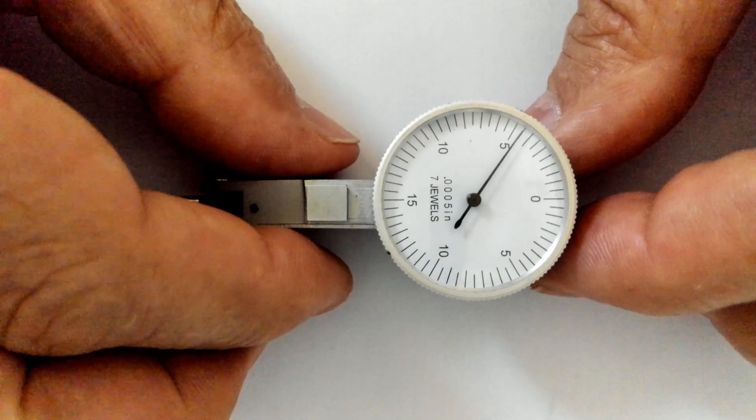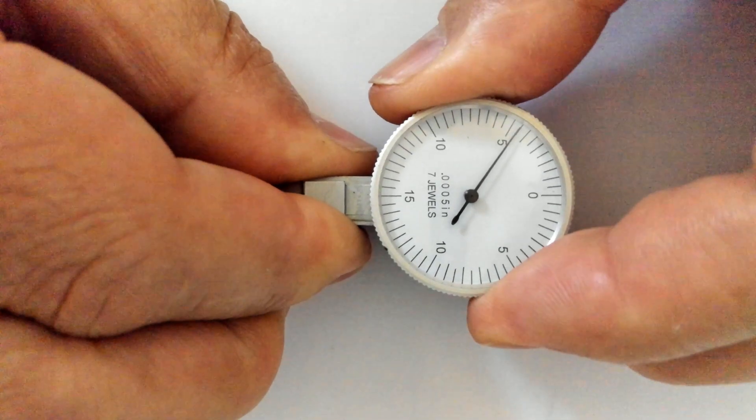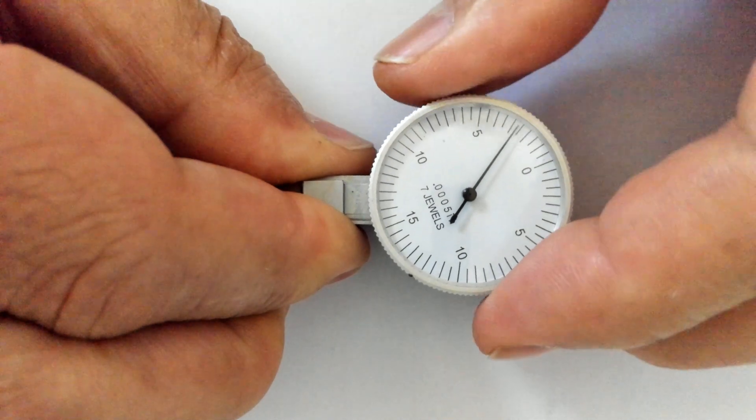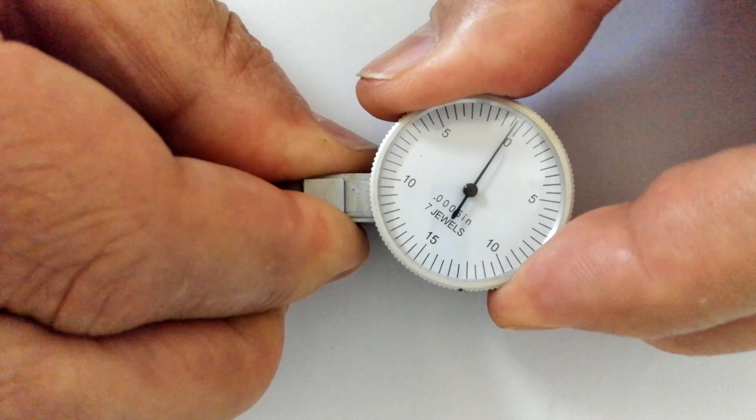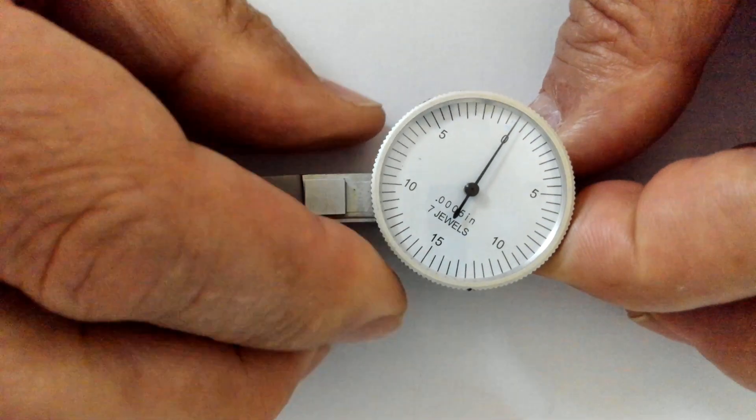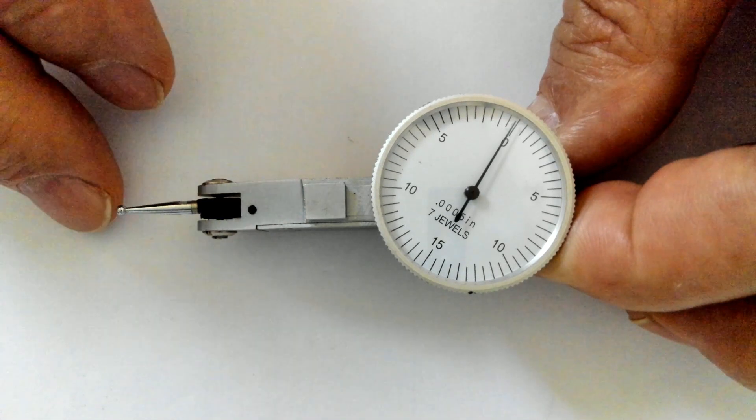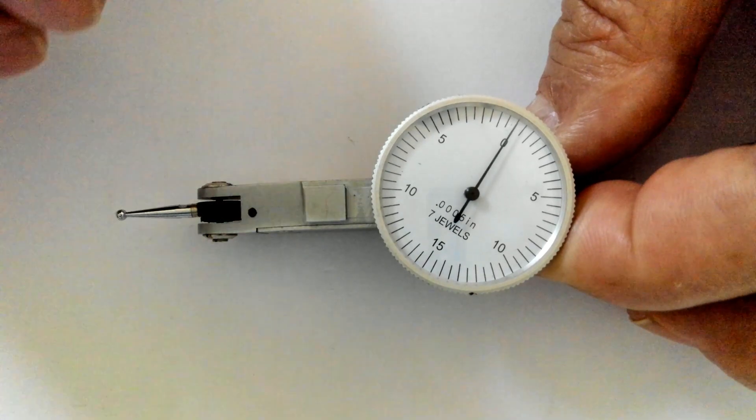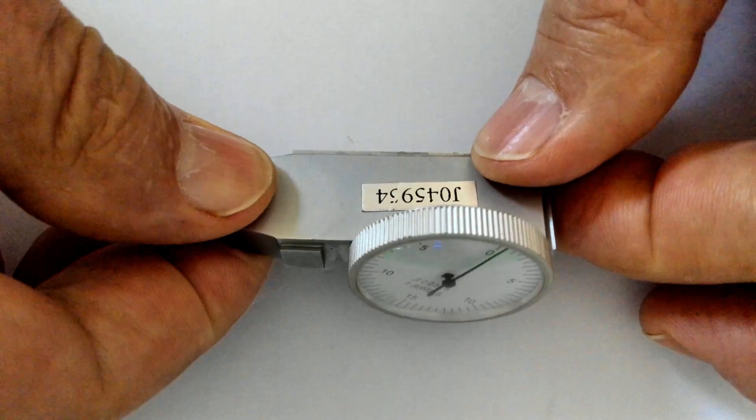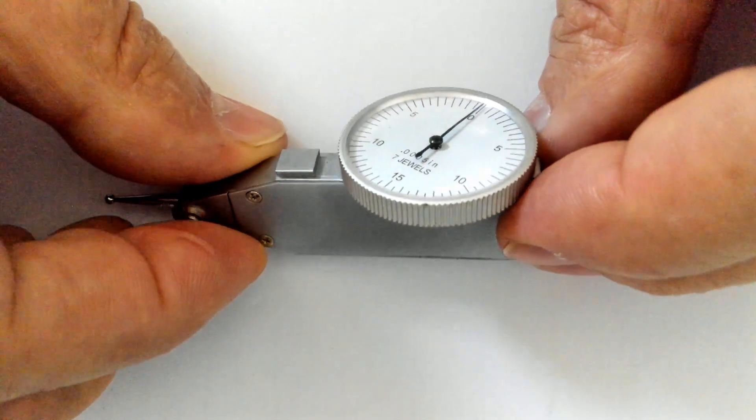The dial needle can be aligned with zero by rotating the bezel scale. Notice that there is no scale lock screw but instead the scale is loaded with friction resistance.